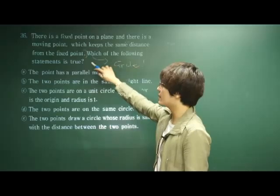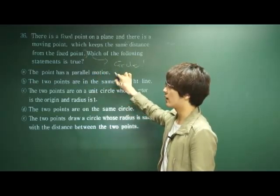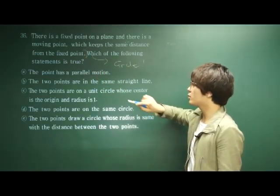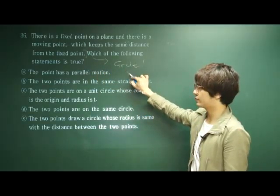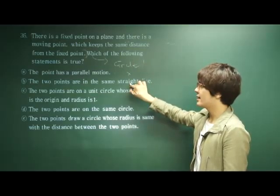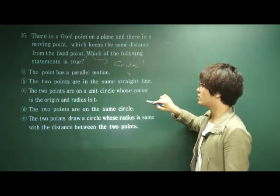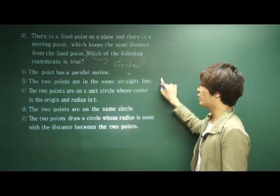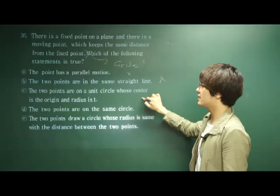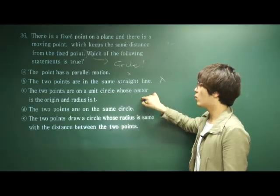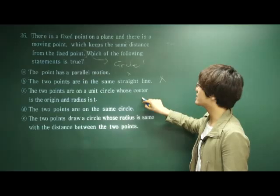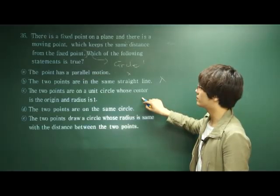So which of the following statements is true? A: the point has a parallel motion — that would be circular motion, right? B: the two points are in the same straight line — no. C: the two points are in a unit circle whose center is the origin and the radius is equal to one.